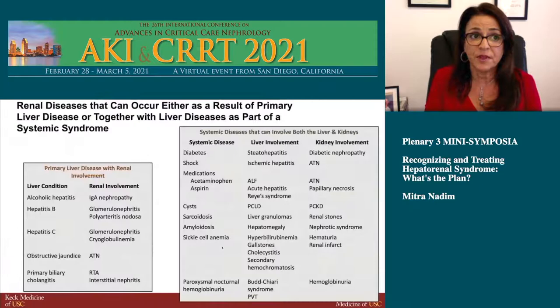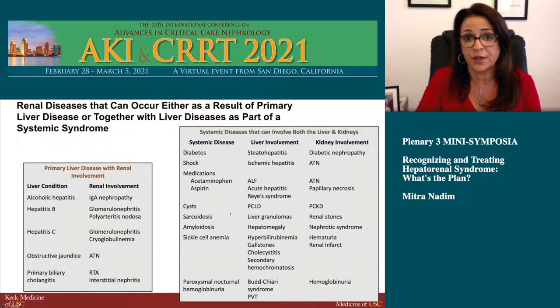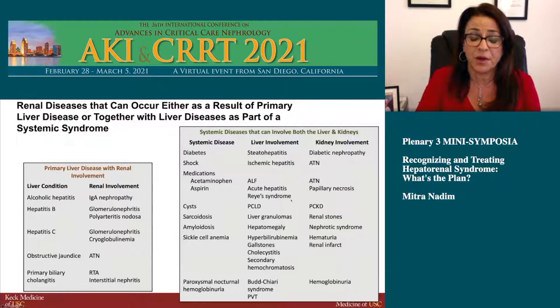We need to keep in mind other causes of kidney disease in patients with liver disease. They can have glomerular diseases associated with various liver conditions, acute tubular necrosis, bile acid nephropathy — which is increasingly discussed — and interstitial nephritis. There are also systemic diseases like diabetes, shock, sarcoidosis, amyloid, and sickle cell that can involve both liver and kidney.